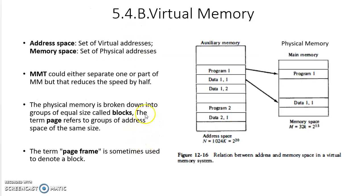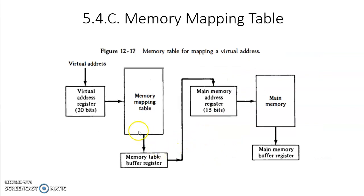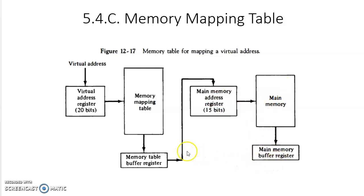How does it happen? It happens with the help of memory management hardware. The main component in this hardware is the memory mapping table. The virtual address generated by the CPU is a 20-bit address, kept in the virtual address register. This memory mapping table is like the mapping table of cache memory — it stores addresses and data. This address is compared with stored addresses, and when there is a match, the data is fetched from main memory and given to the CPU using the memory buffer register and main memory address register.